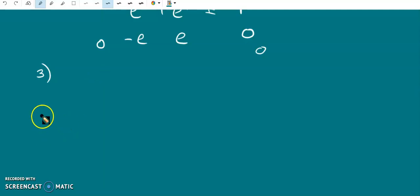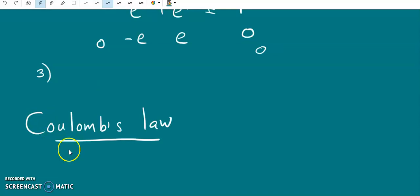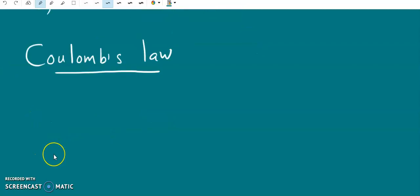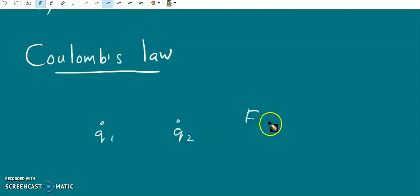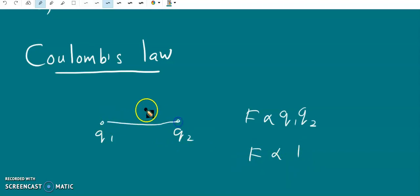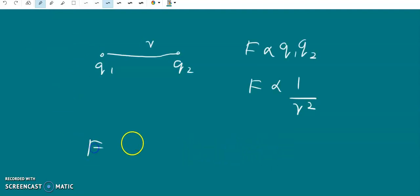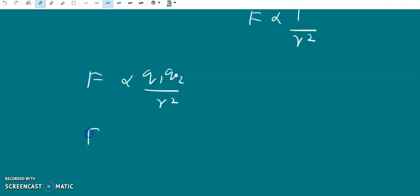Now we discuss Coulomb's law. Coulomb's law was proposed by the scientist Charles Augustin Coulomb. According to this law, the force between two charges Q1 and Q2 is directly proportional to the product of the charges and inversely proportional to the square of the distance between them. Let R be the distance between the two charges. Then F is proportional to Q1·Q2 / R², or we can write F = k·Q1·Q2 / R².